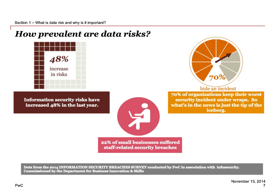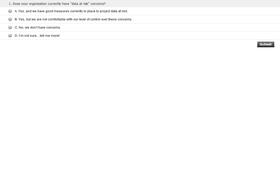The first CPE question: Does your organization currently have data at risk concerns? A — yes, and we have good measures currently in place to protect data at risk. B — yes, but we're not comfortable with our level of control over these concerns. C — no, we don't have concerns. D — I'm not sure, tell me more. A question sent to us prior to the webcast: during an SAP implementation, when do we need to start thinking about data concerns?